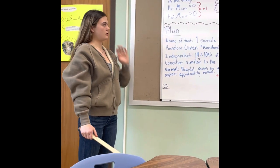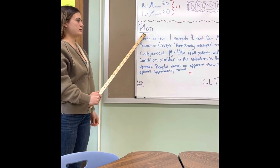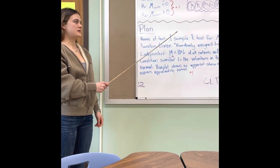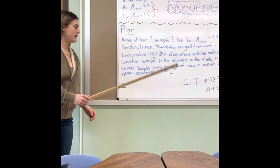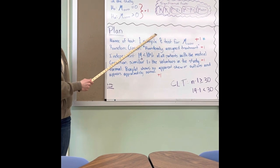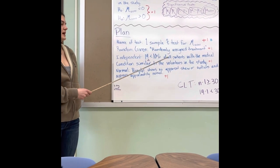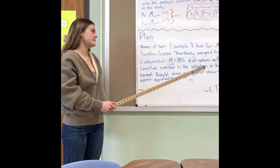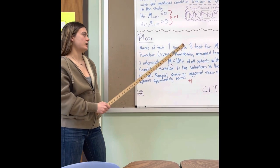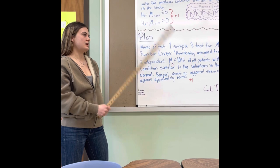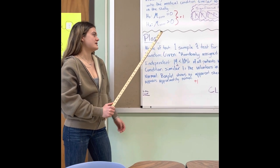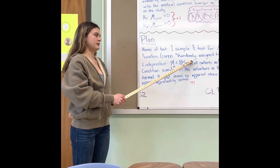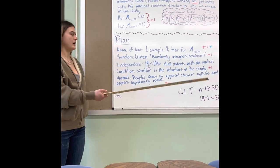The next thing we do is plan. First, we name the test: the one-sample T test for mu difference. It's a T because we're dealing with a mean, and it's one sample because there was one group of people that went through both treatments. The first condition is random — the experiment used a randomly assigned treatment, so we can assume it's random.